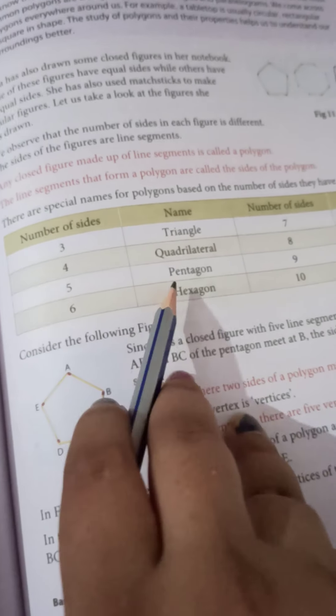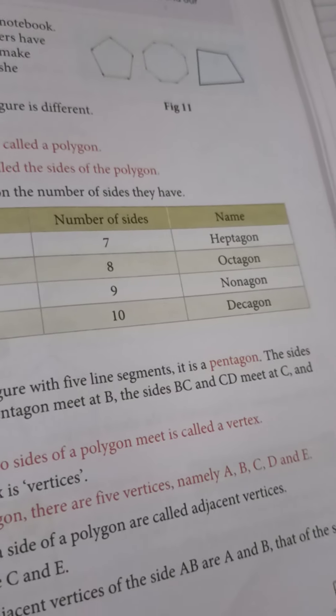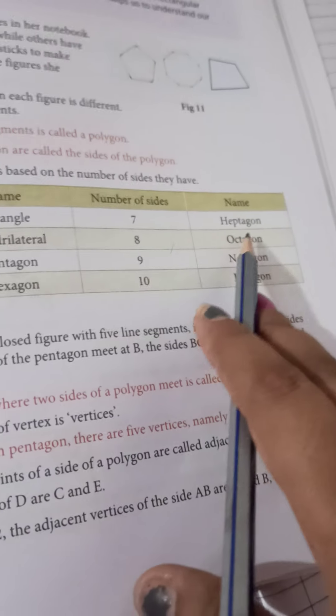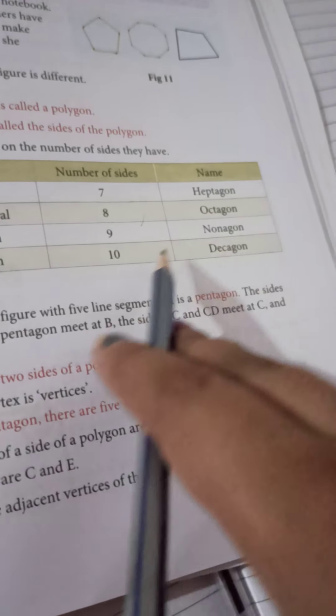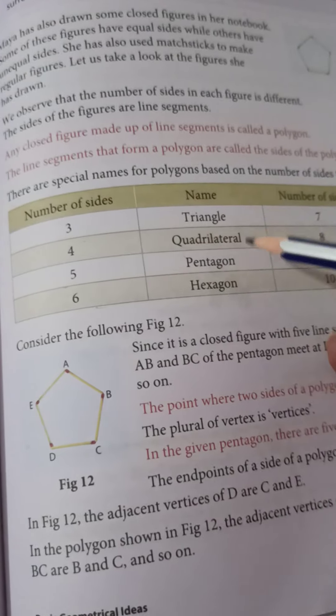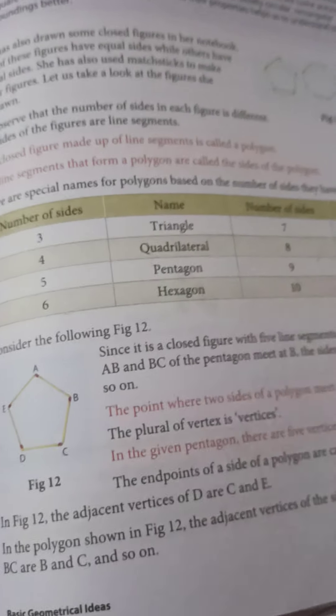The figure which has four sides is a quadrilateral. Five sides — pentagon. Six sides — hexagon. Seven sides — heptagon. Eight sides — octagon. Nine sides — nonagon. And ten sides — decagon. These are the number of sides and these are the names of the figures made by these sides.